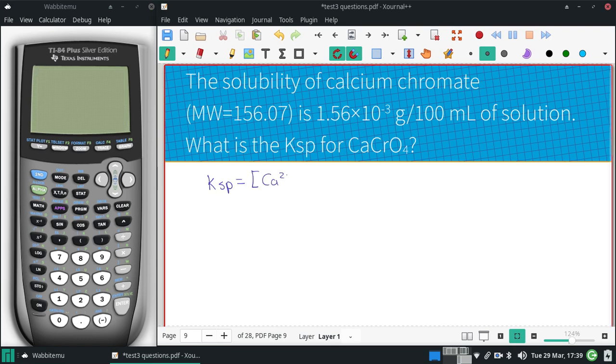Calcium is two plus, and chromate is a two minus, a nice little one-to-one ratio, giving us an S and an S. If we had our molar solubility, we could just square it and get our Ksp.